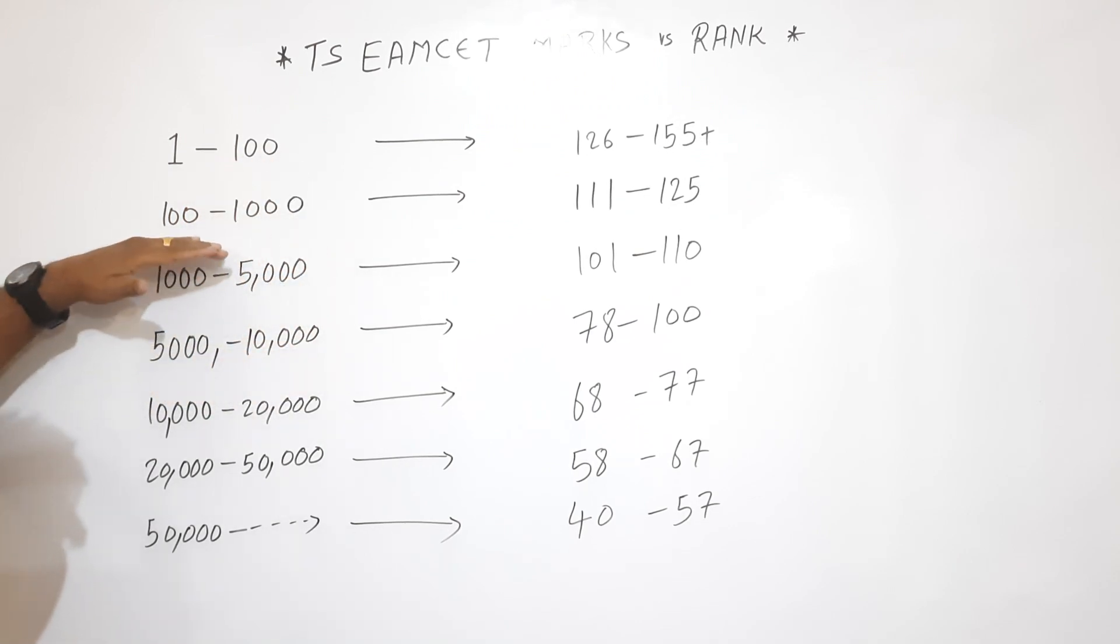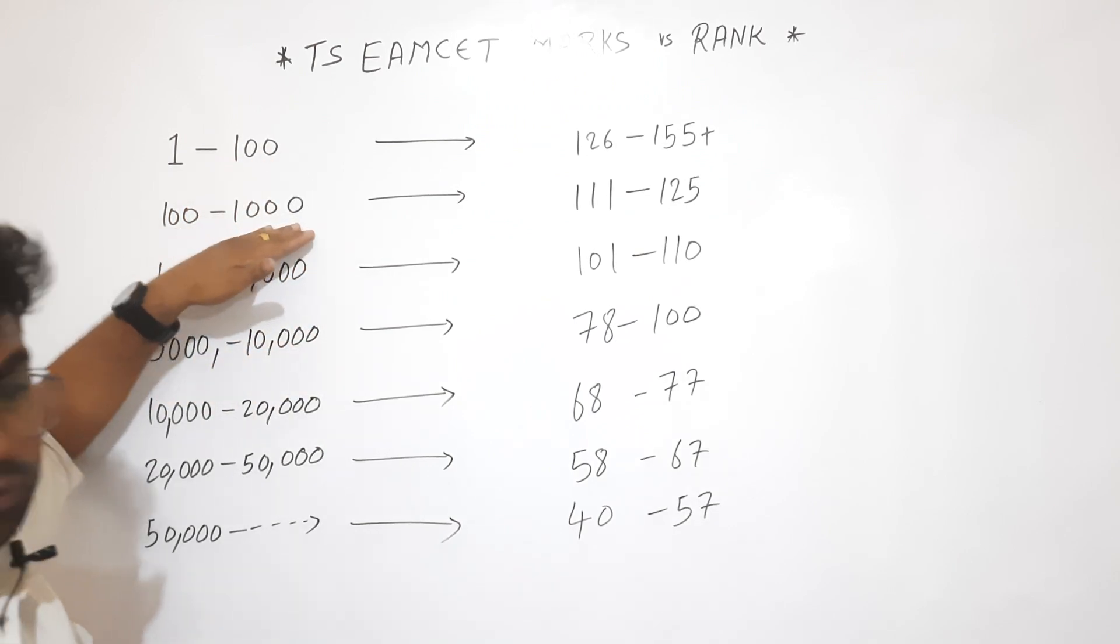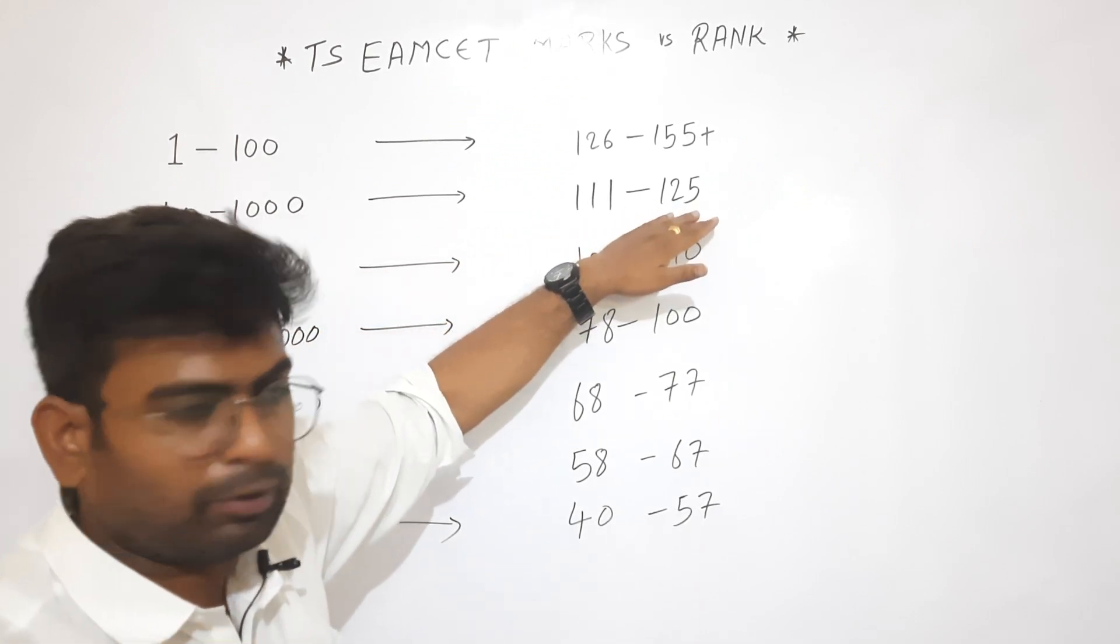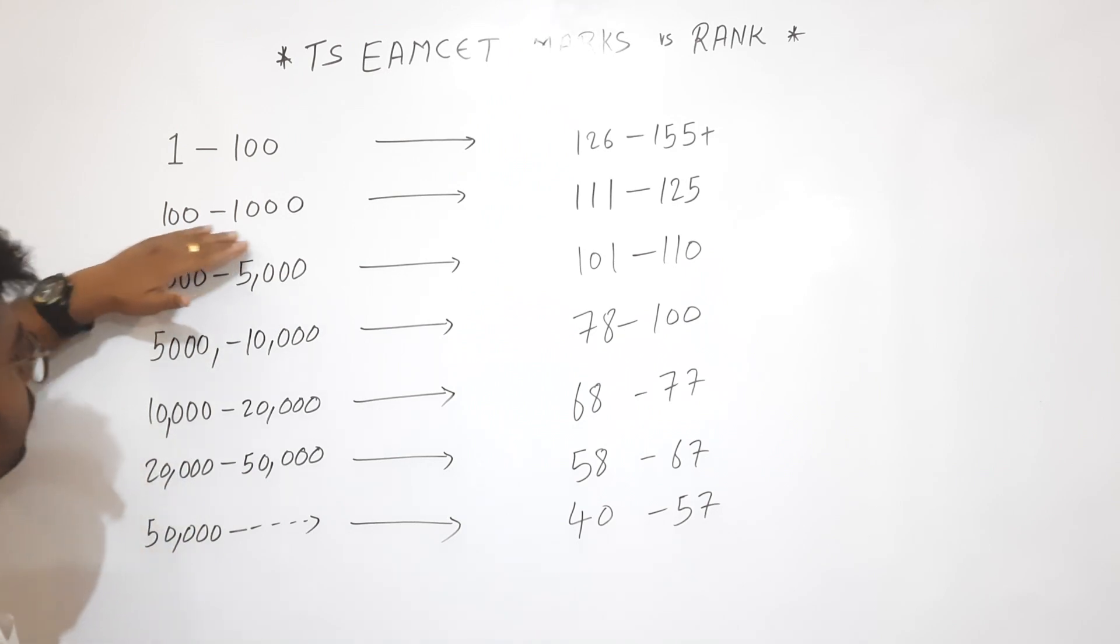So if you are 100 to 1000 rank, 111 to 125 marks, you are 100 to 1000 rank.